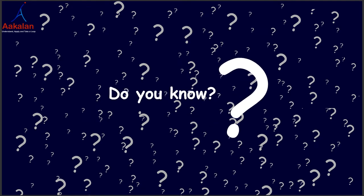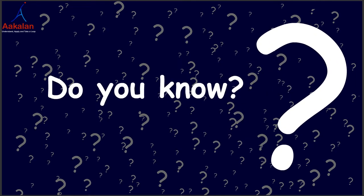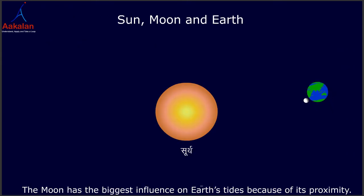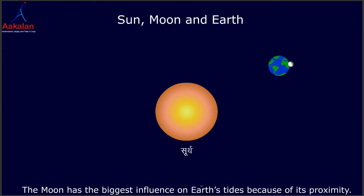Do you know why the Sun does not affect the tides on Earth? Actually, the Sun does affect tides. The Moon has the biggest influence on Earth's tides because of its proximity.